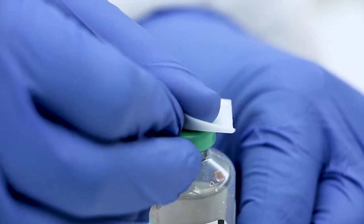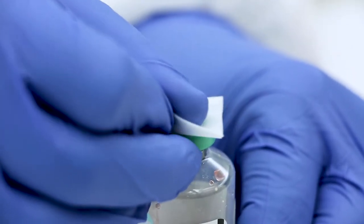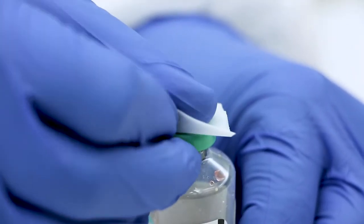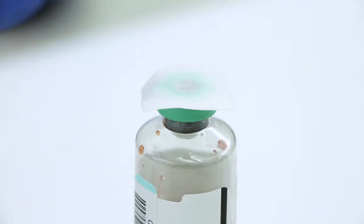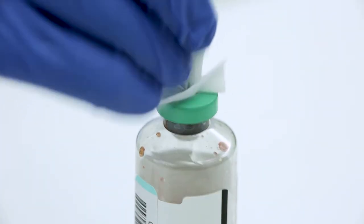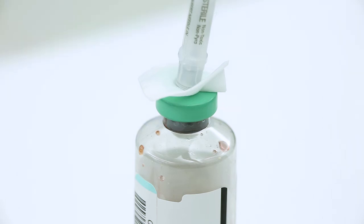Clean bottle top septum with an alcohol pad and leave the alcohol pad on the bottle top. Remove the needle protective cover and insert the subculture unit needle end into the middle of the circular target of the bottle septum. Allow any gas buildup to vent.